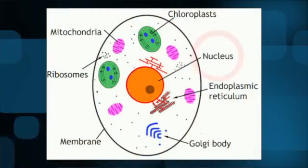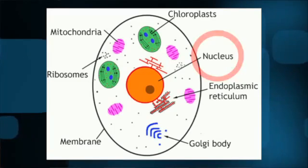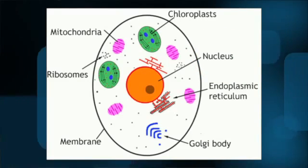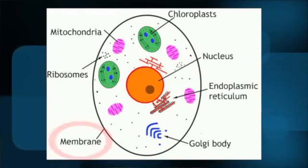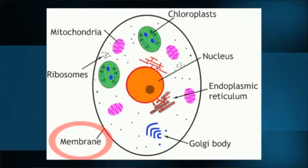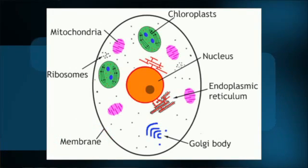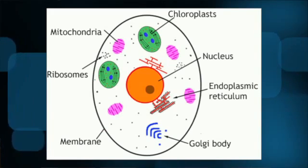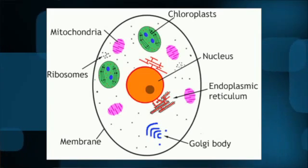Every cell in your body has a nucleus where all the DNA is, and then around that it has the outside membrane. You have the outside membrane and the inside nucleus with the membrane around it where all the DNA is. Inside that area, between the two membranes, you also have little organelles — primarily mitochondria.